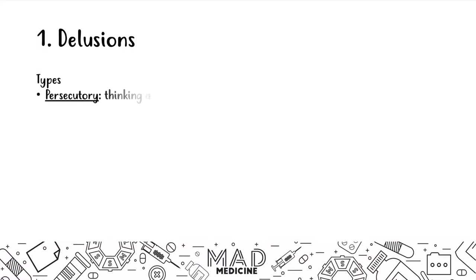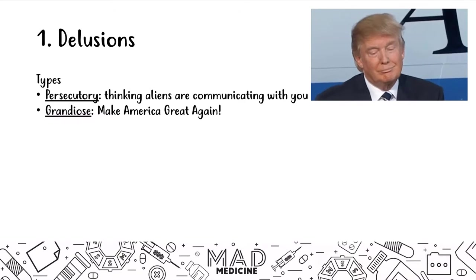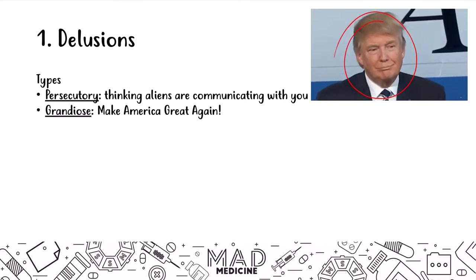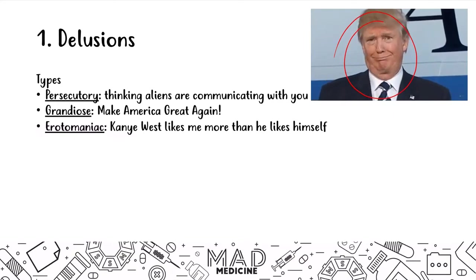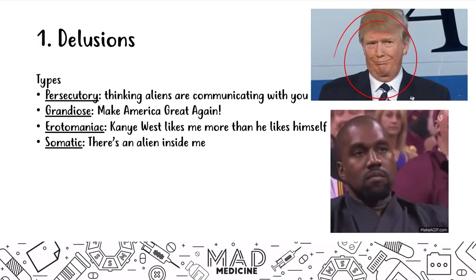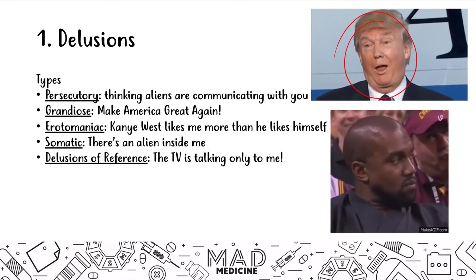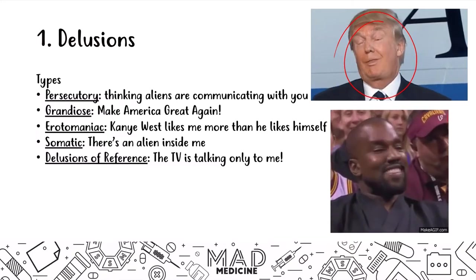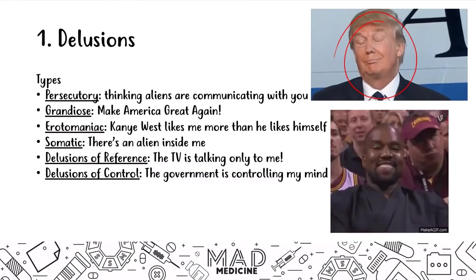In persecutory delusions, patients are going to think that aliens are communicating with them — they think that someone is talking to them directly. In grandiose delusions, patients have an inflated sense of self-importance. Erotomanic delusions involve believing that someone famous or high-status is in love with you — like believing Kanye West likes you more than he likes himself. Somatic delusions are when patients say there's an alien inside of me. Delusions of reference is when they believe something external is affecting them specifically, like a TV newscaster talking directly to them through the TV. And delusions of control are when patients believe that the government is controlling their mind.